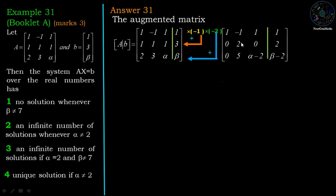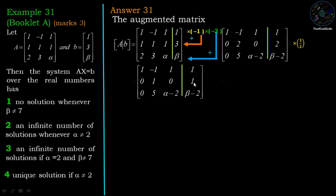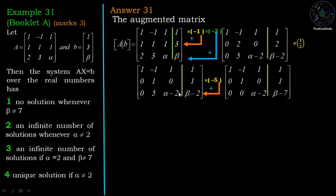Next, to get a leading one in the second row, we multiply the second row by 1/2, giving us the second row as [0, 1, 0, 1]. Then, to make the entry below the leading one in the second column zero, we multiply the second row by -5 and add to the third row. This gives us the row echelon form of augmented matrix [A|B], from which we can determine the rank. Note that the number of columns in A is 3, so n = 3.